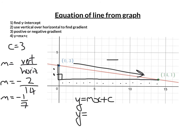So m is negative 1/7, x stays as x, and c is 3. So the equation of this straight line is y = -1/7x + 3.